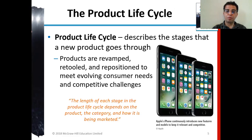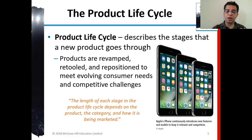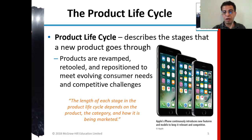The product life cycle describes the stages a new product goes through. Products are revamped, retooled, and repositioned to meet evolving consumer needs and competitive challenges. The length of each stage depends on the product itself, the category, and how it's marketed. For example, the iPhone continues to introduce new features and models to keep itself relevant and competitive.